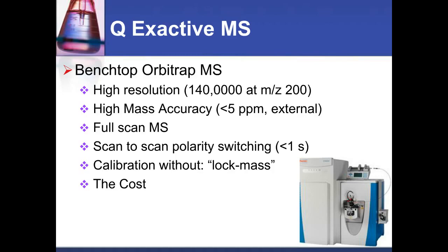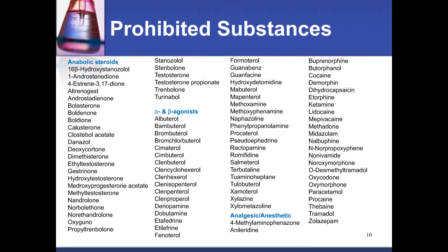The Q-Exactive is a benchtop Orbitrap mass spectrometer. The original Orbitrap was a floor model; this benchtop model has comparable capability with very high resolution of 140,000 at m/z 200 and high mass accuracy. We routinely obtain 5 ppm with external reference calibration on most compounds. It provides full scan data with polarity switching, a lock mass feature, front-end quadrupole experiments, and instrument cost very comparable to other triple-quad or high-end mass accurate instruments.